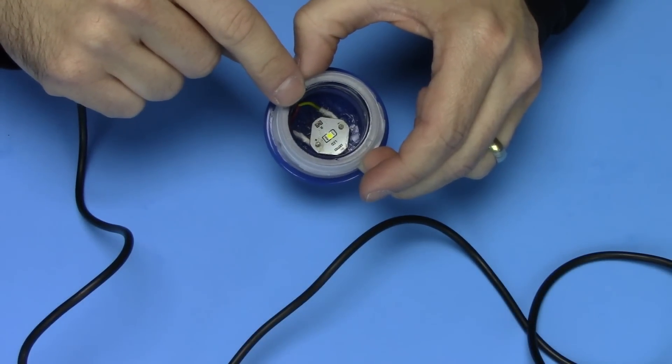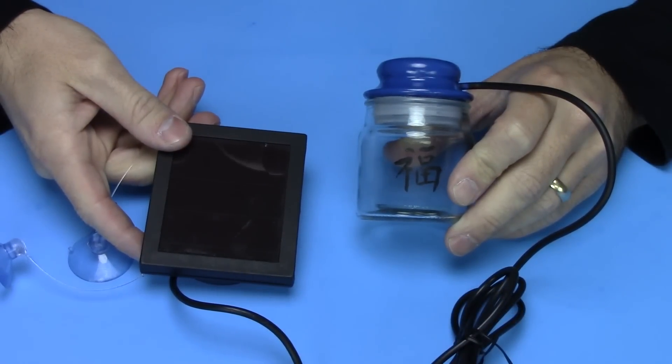And go ahead and silicone your LED. Okay, this is what the jar looks like. You'll see it in the dark.